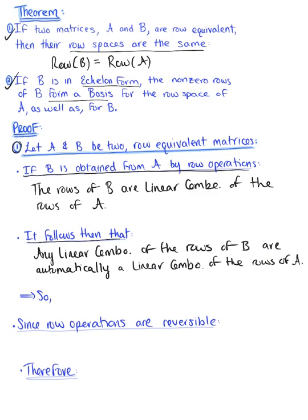In other words, the row space of matrix B is contained in the row space of matrix A. We can say that the row space of matrix B is a subspace of the row space of matrix A, because the row space of B is contained in the row space of A.